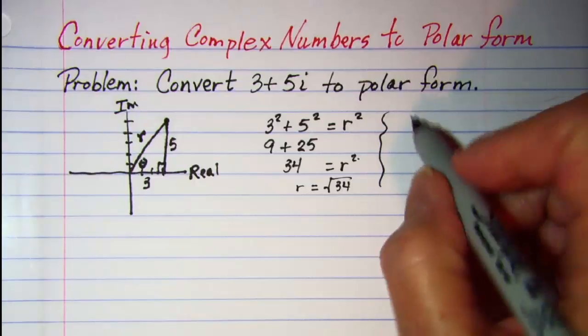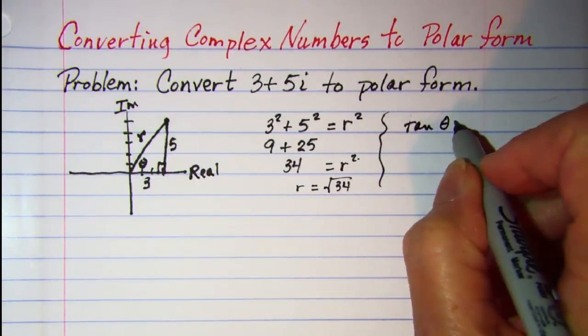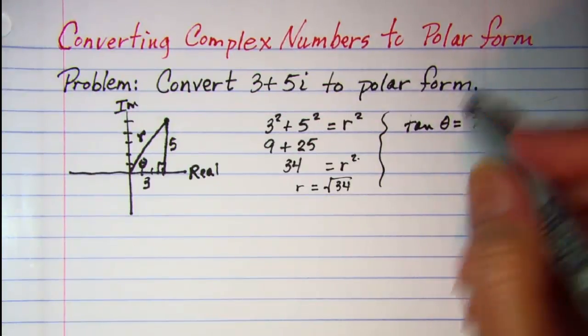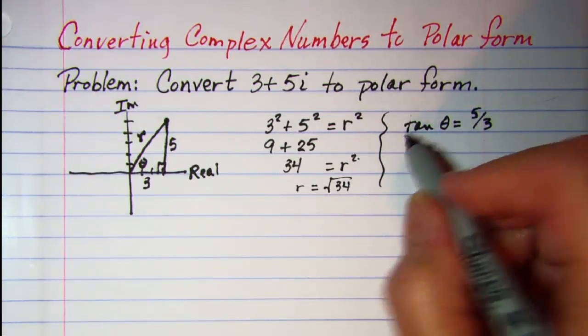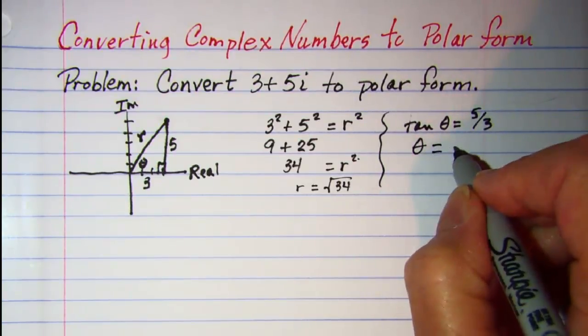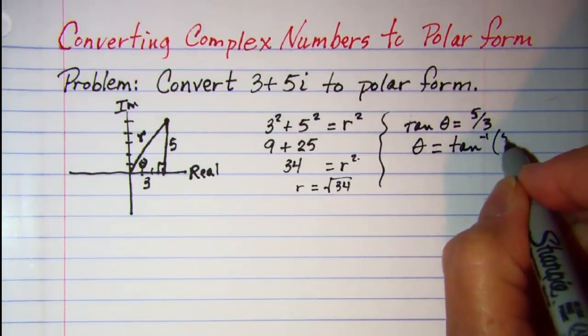So we know the tangent of theta is 5 over 3 so when we arc tangent both sides we have theta is arc tan 5 over 3.